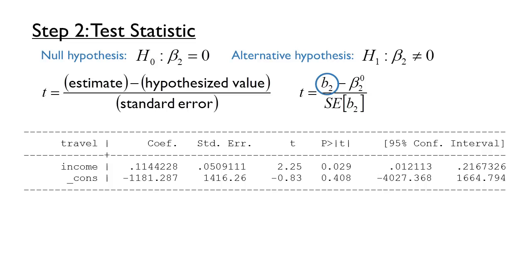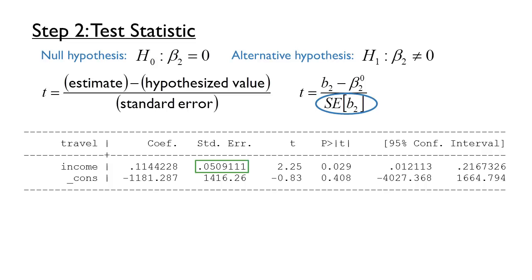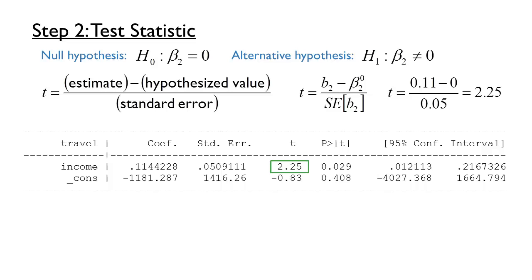The estimate of beta 2, or b2, is 0.11 from the regression output. The hypothesized value of beta 2, represented with a 0 superscript, is 0 from the null hypothesis. The standard error estimate corresponding to the beta 2 estimate is 0.05, also from the regression output. Plugging in these values, we find that t equals 2.25. You may notice this value also appears in the regression output in the same row as the coefficient. This is a handy shortcut, except be aware that the stored t-statistics apply only to tests centered around 0. You will have to calculate t manually for tests centered around other values.